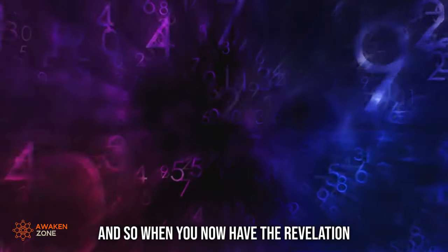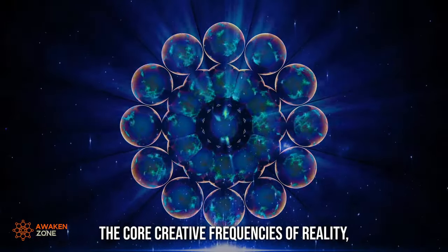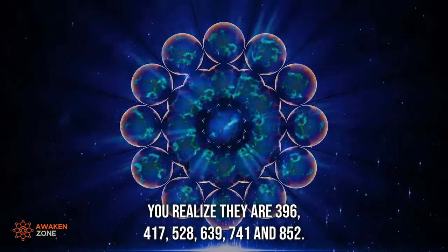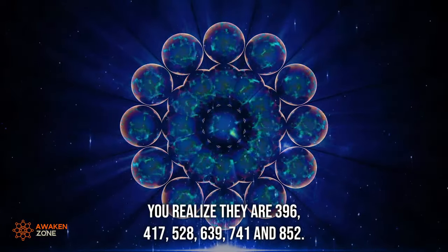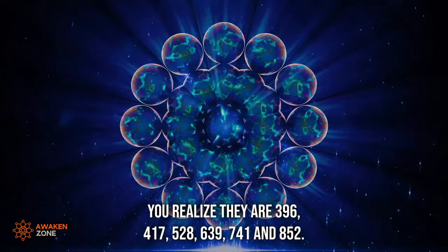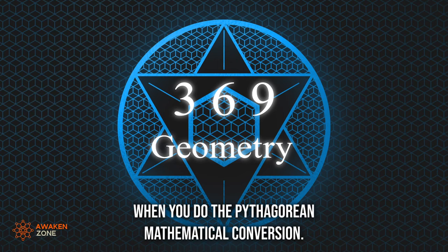And so when you now have the revelation of the original musical scale, the core creative frequencies of reality, you realize they are 396, 417, 528, 639, 741, 852, 963. That is all threes, sixes, and nines when you do the Pythagorean mathematical conversion.